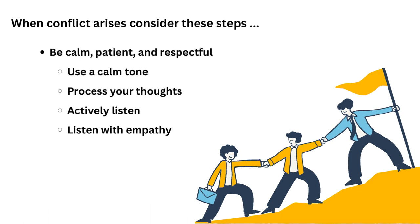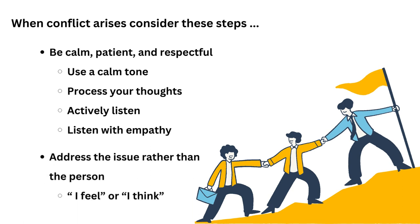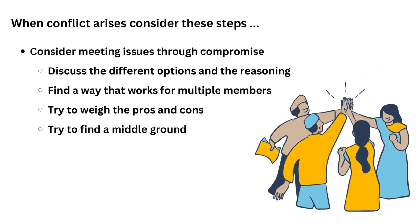Be calm, patient, and respectful. Some ways to do this are using a calm tone, taking some time to process and find the best way to articulate your thoughts, and actively listening to group members — or try to listen with empathy. Address the issue rather than the person; try using phrases that start with 'I feel' or 'I think.' Consider meeting issues through compromise by discussing differing options and finding a way that works for multiple members, or weigh the pros and cons to find a middle ground.